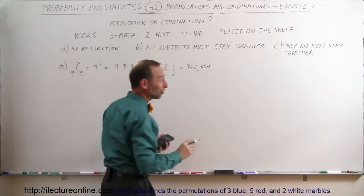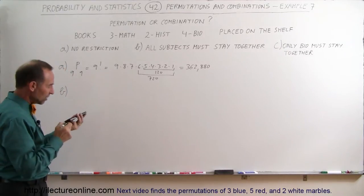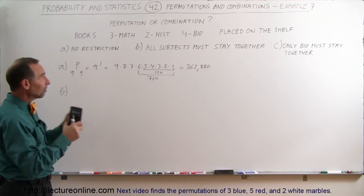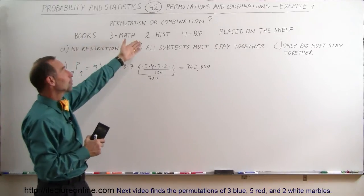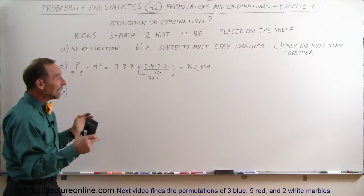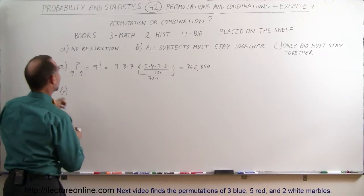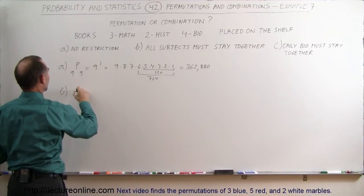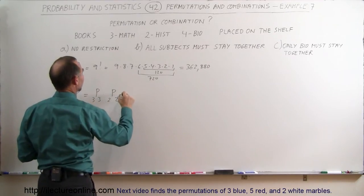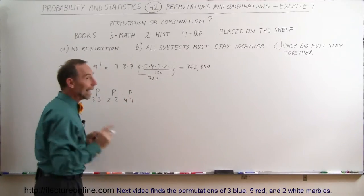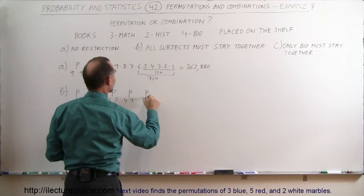I should say permutations, not combinations. For Part B, all subjects must stay together. The math books can be rearranged among themselves, the history books can be rearranged among themselves, and the biology books can be rearranged among themselves. For each permutation of the math books you can have so many permutations of the history books and biology books. Then the three subject groups can also be arranged relative to each other. So for Part B, the total permutations equals the permutations of the three math books, times the permutations of the two history books, times the permutations of the four biology books, times the permutations of the three subject groups.